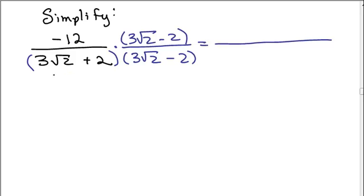This is going to be (A + B)(A - B) which equals A² - B². Remember the middle terms cancel out? So (3√2)² means 3√2 times 3√2, that's 9 times 2 which is 18. And then minus 2 times 2, that's 4. So the denominator will be 14.